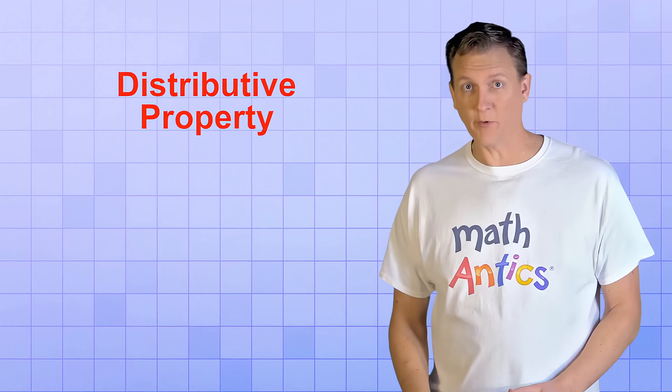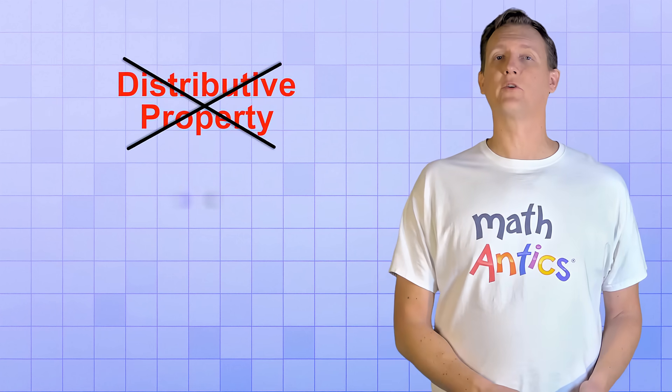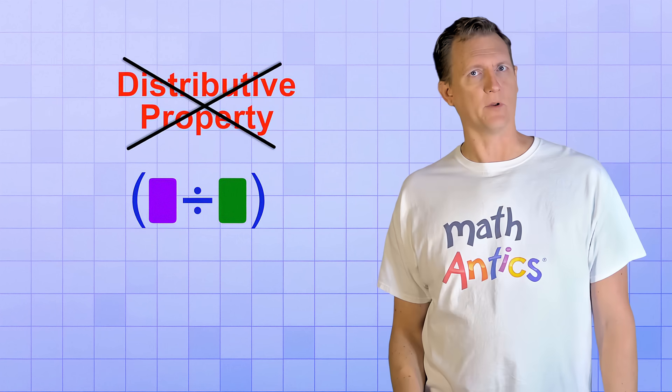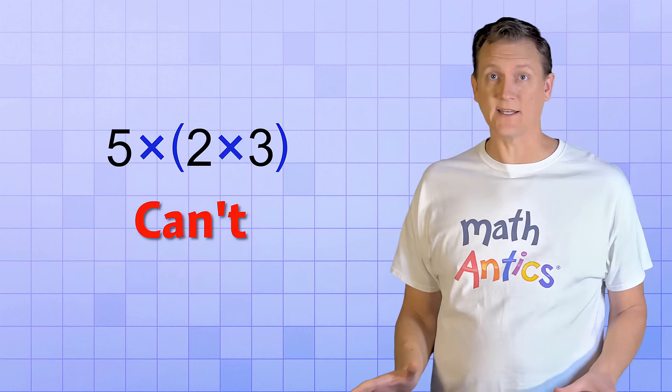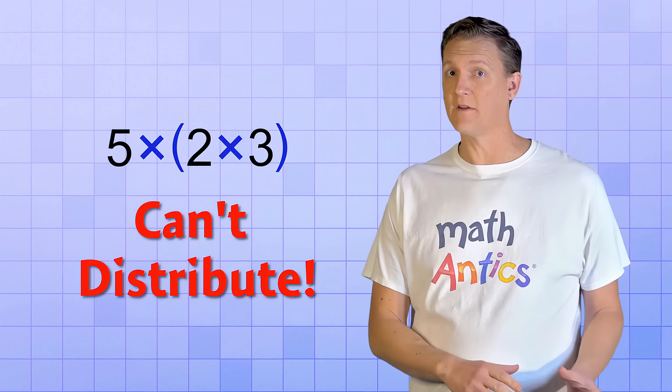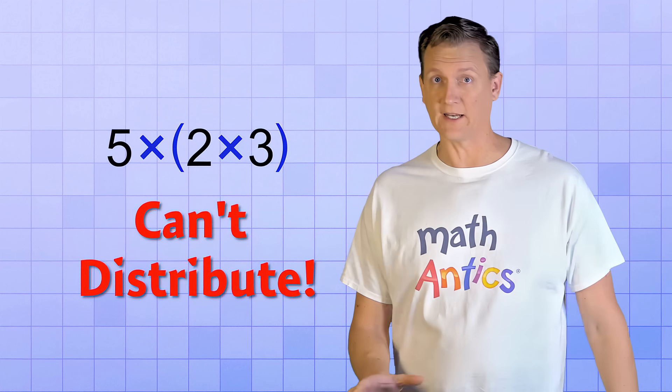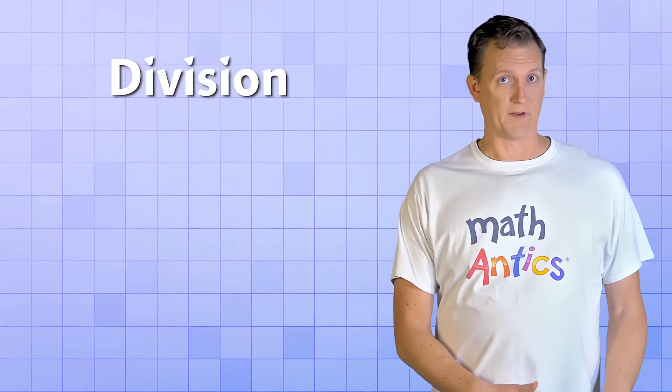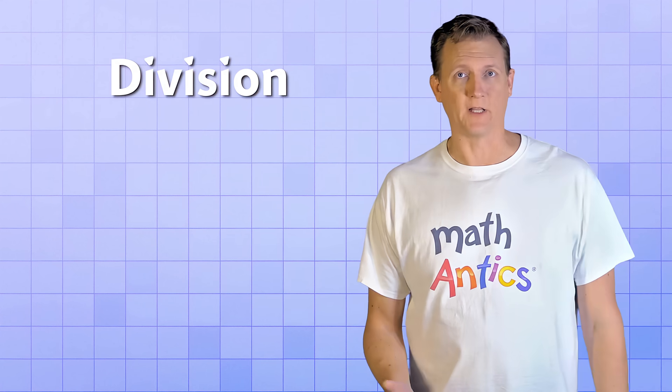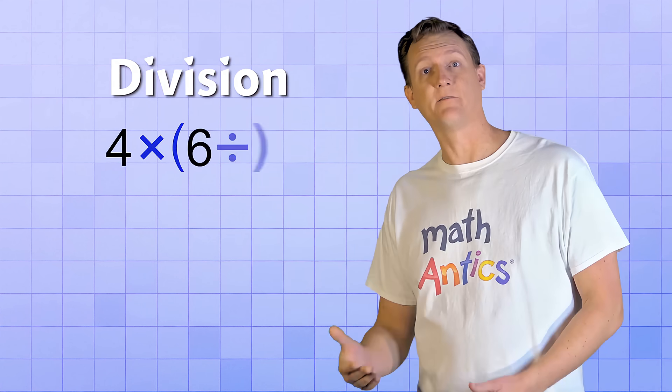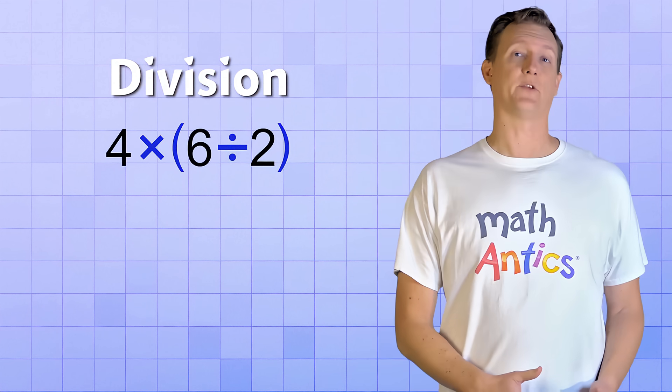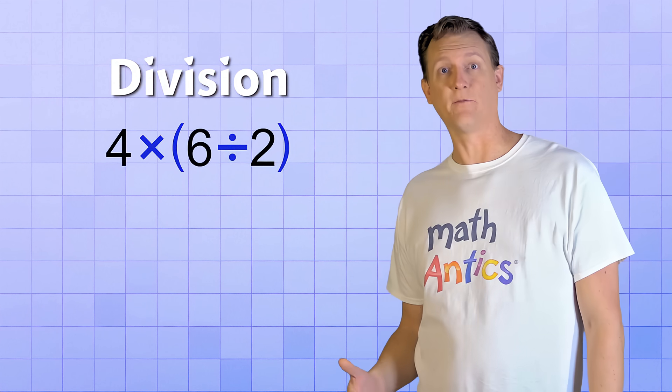But the Distributive Property doesn't work when the members of a group are being multiplied or divided. For example, if you have 5 times the group 2 times 3, you CAN'T distribute a copy of the factor 5 to each member of the group without getting a completely different answer. And the same goes for division. If the members of a group are being divided, like 4 times the group 6 divided by 2, you will NOT get the right answer if you distribute the factor 4 to each member.